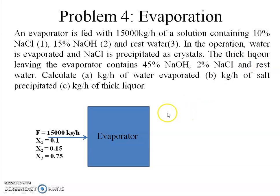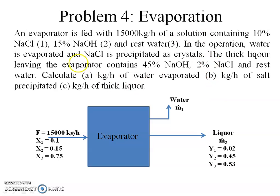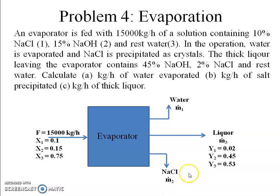The operation produces three outgoing streams: water vapor evaporated, NaCl crystals precipitated, and thick liquor. The thick liquor composition is: mass fraction of NaOH = 0.45, mass fraction of NaCl = 0.02, and mass fraction of water = 0.53 (calculated as 1 minus 0.02 minus 0.45). This completes the flowchart, fully labeled with knowns and unknowns m1-dot (water evaporated), m2-dot (salt precipitated), and m3-dot (thick liquor).